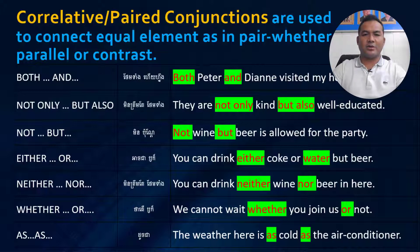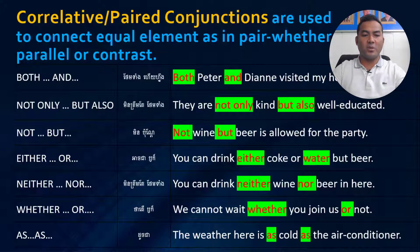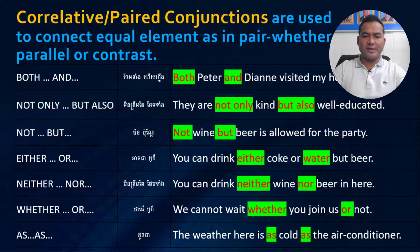With 'not/but': 'Not wine, but beer is allowed for the party.' With 'either/or': 'You can drink either Coke or water.' With 'neither/nor': 'You can drink neither wine nor beer here.' With 'whether/or': 'We cannot wait whether you join us or not.'